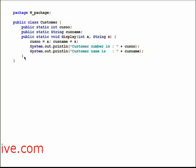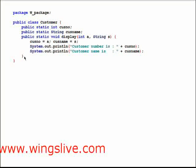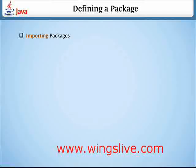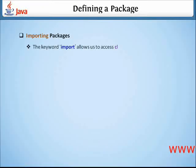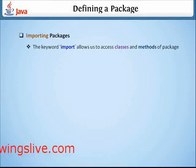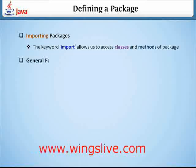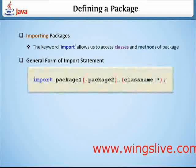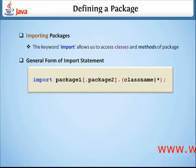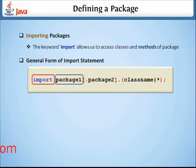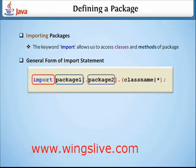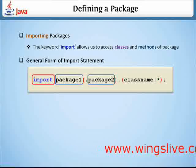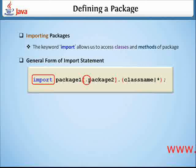Let's discuss how to import the package w_package. The keyword import allows us to access classes and methods of the package we import. Here's the general form of the import statement: 'import' is the keyword, package1 refers to the name of a top-level package, package2 is the name of a sub-package, and the dot is used to separate each package.